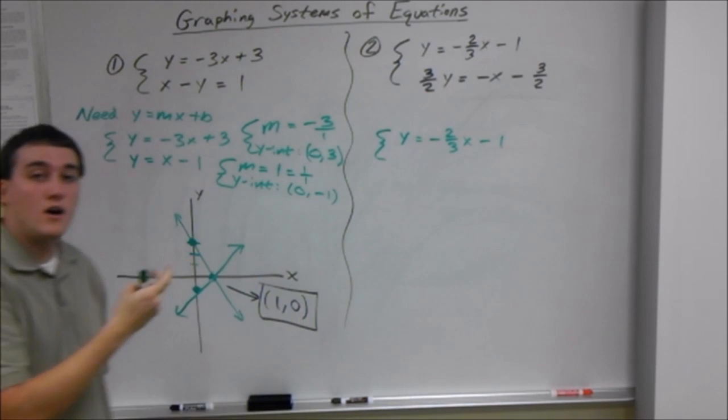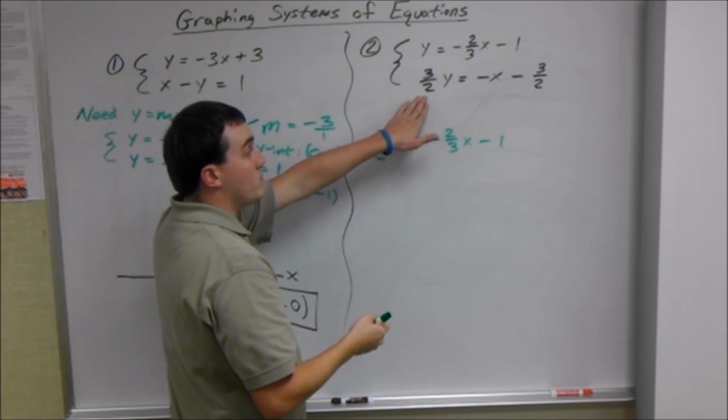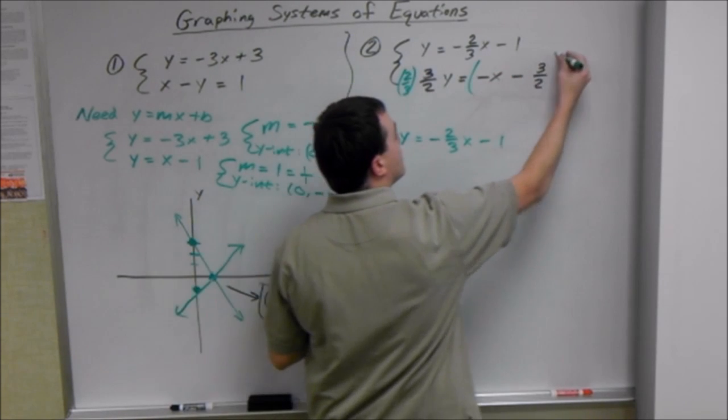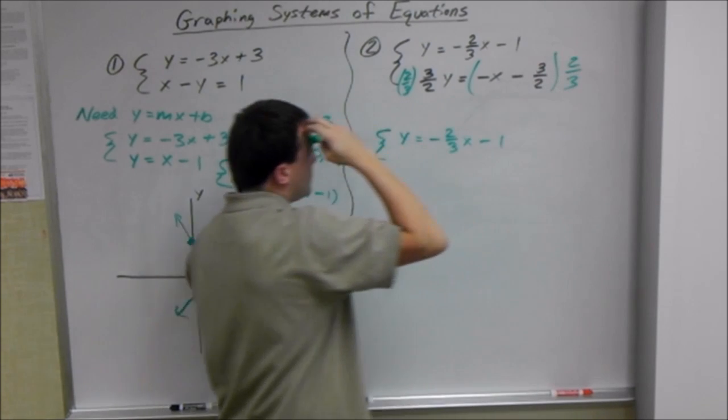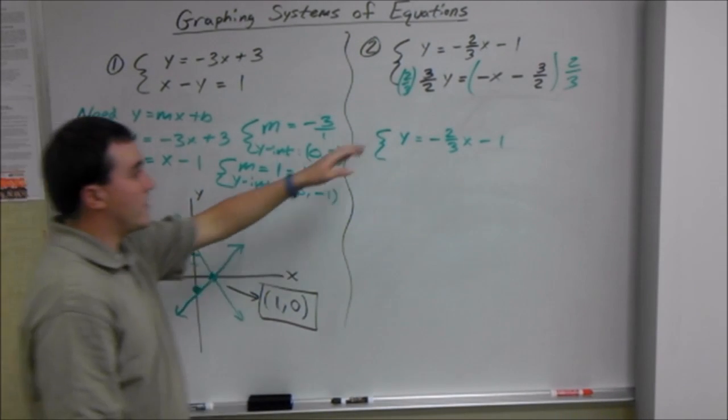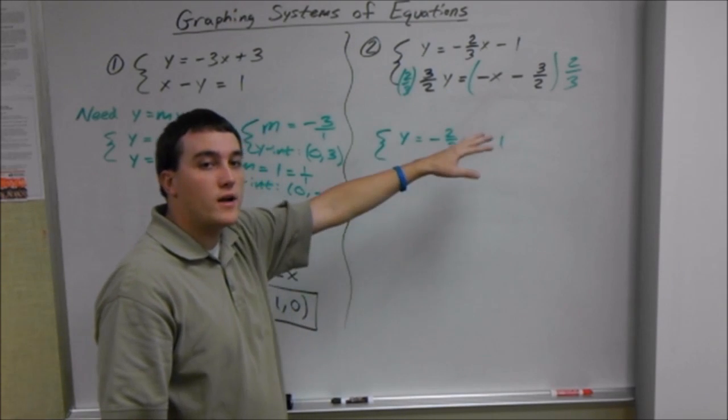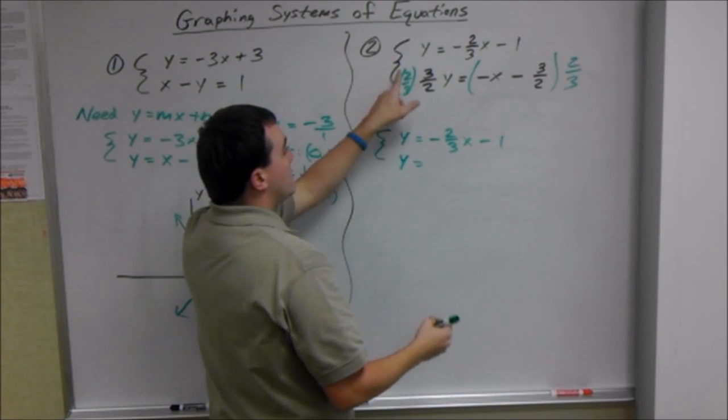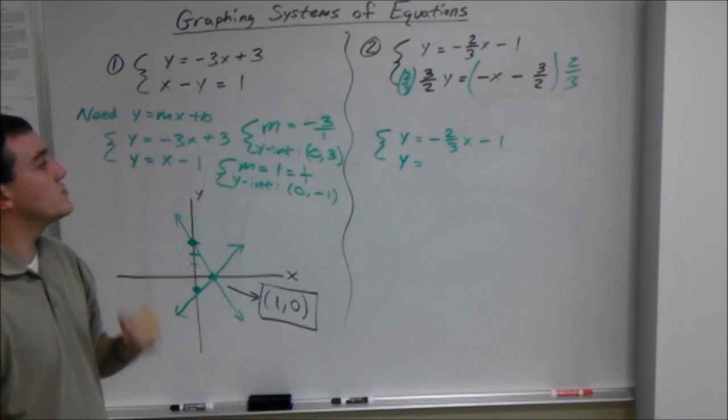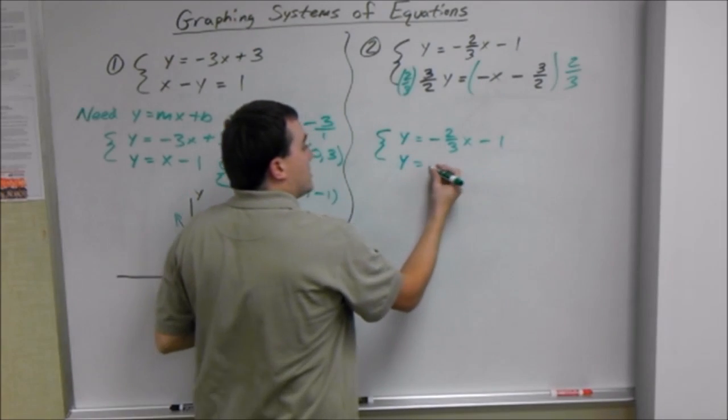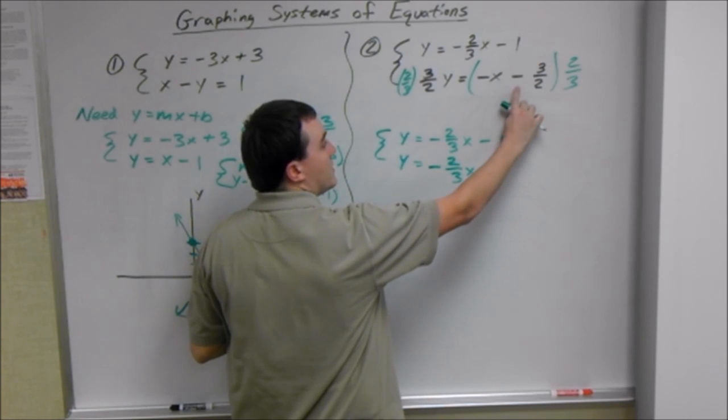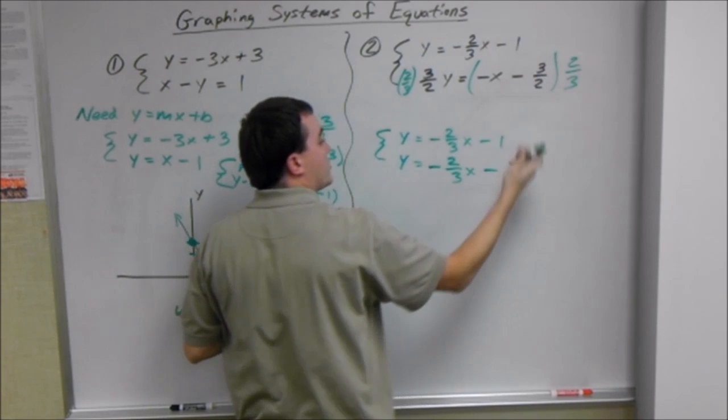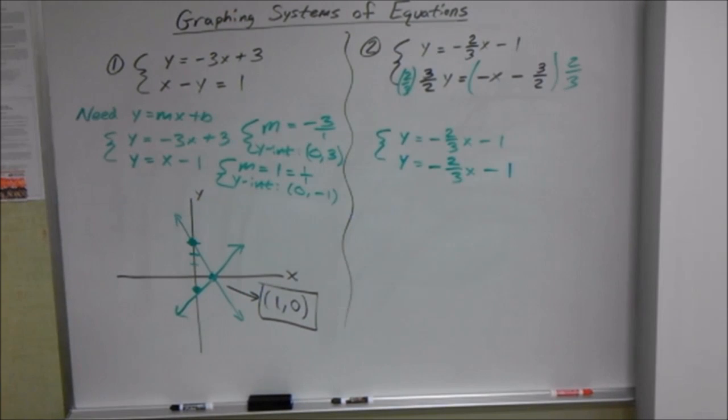To solve for y, if you're multiplying by a fraction, to get rid of it, multiply by its reciprocal. So we multiply by 2 thirds to both of our sides. We pretty much have to do it to every term. Whenever you have to multiply or divide by something to an equation, you multiply it or divide it to every term. So that's going to cancel. We're going to get y equals, 2 divided by 2 is 1, 3 divided by 3 is 1, negative x times 2 thirds is negative 2 thirds x. Negative times a positive is still negative. 3 divided by 3 is 1, 2 divided by 2 is 1, that all turns into 1. So we pretty much have the same equation here.